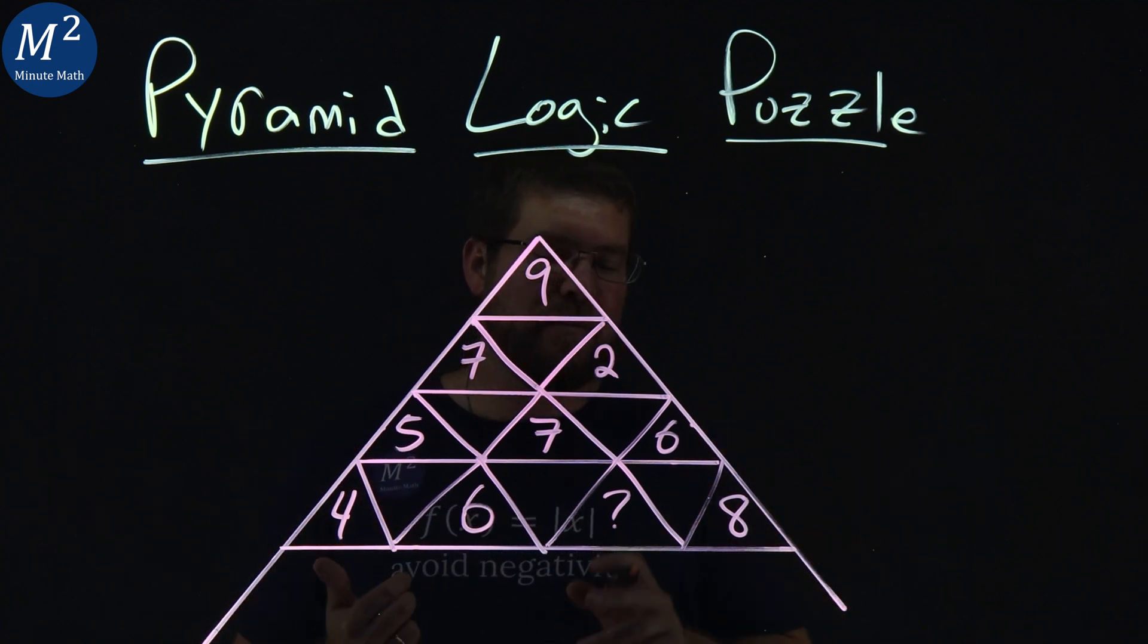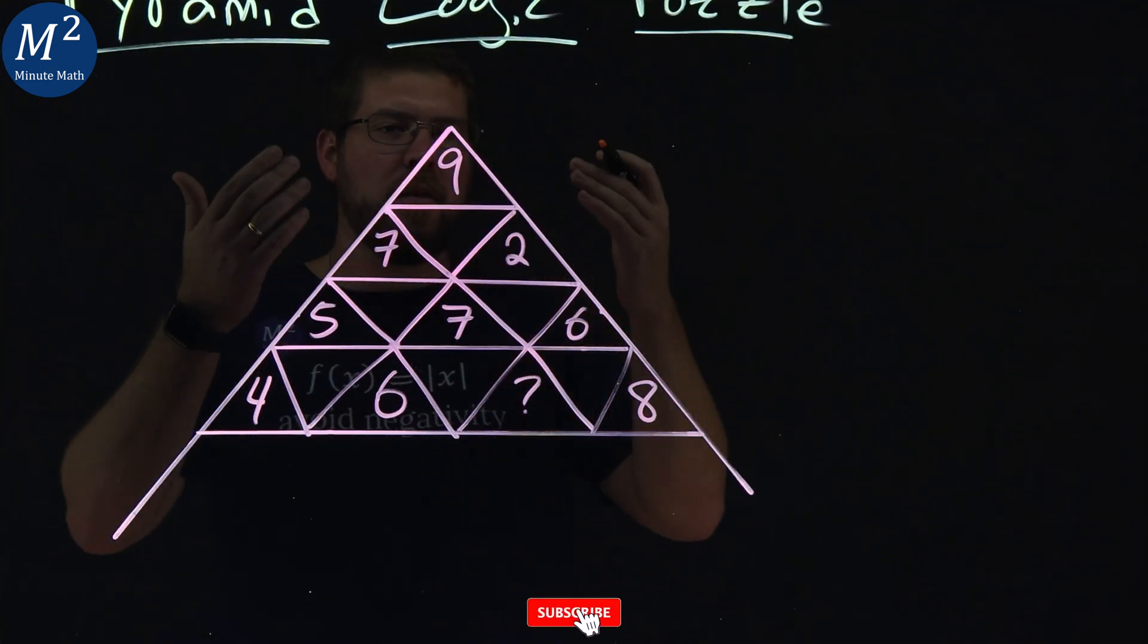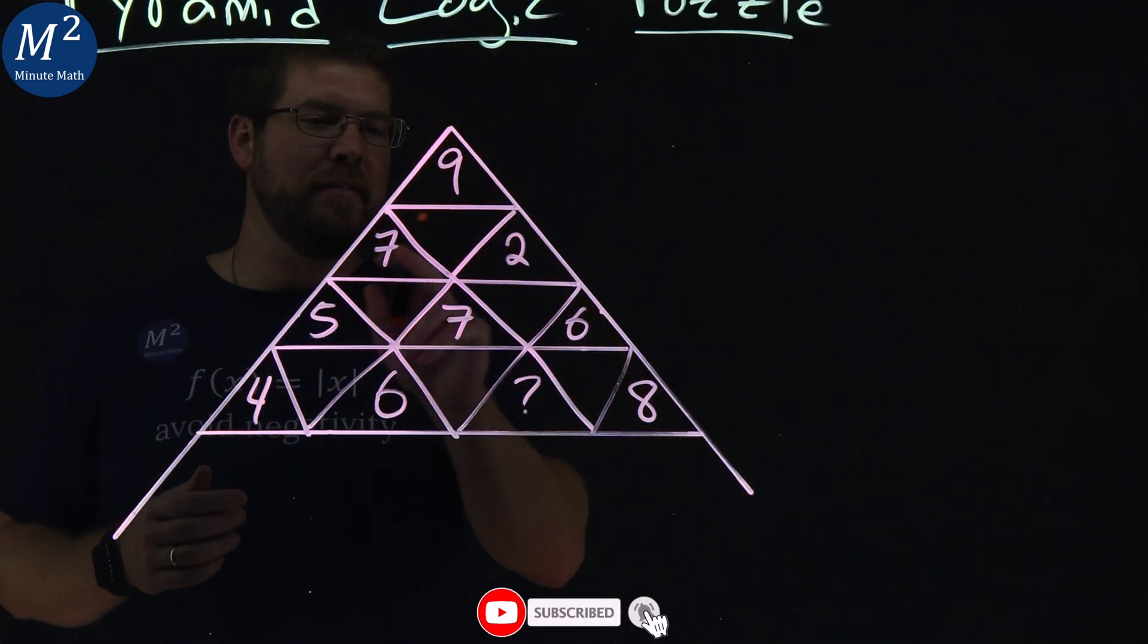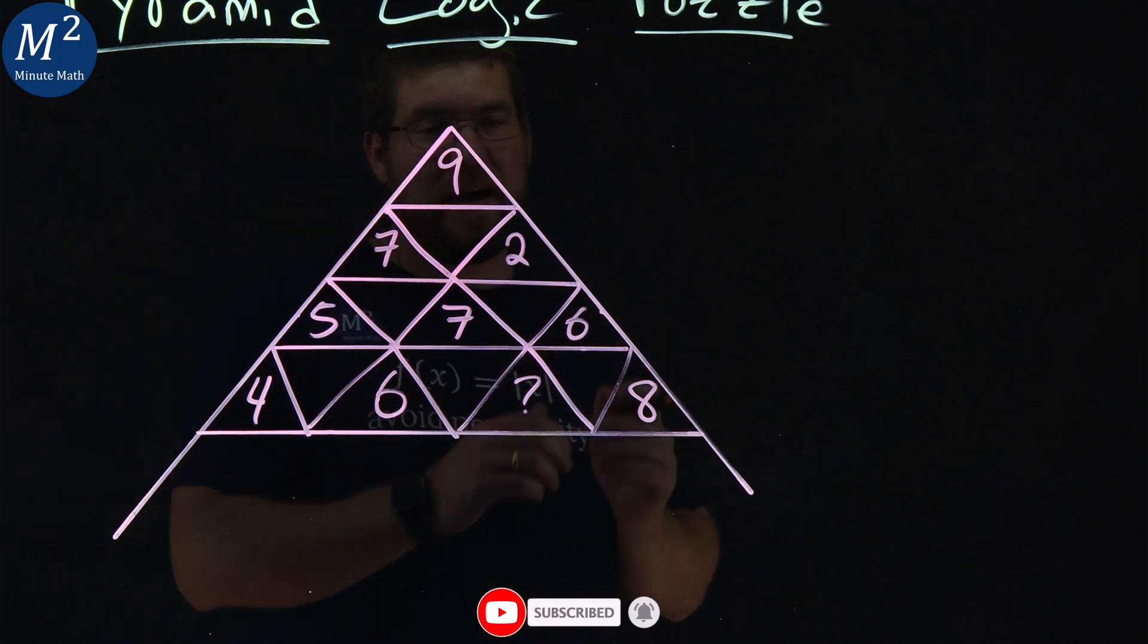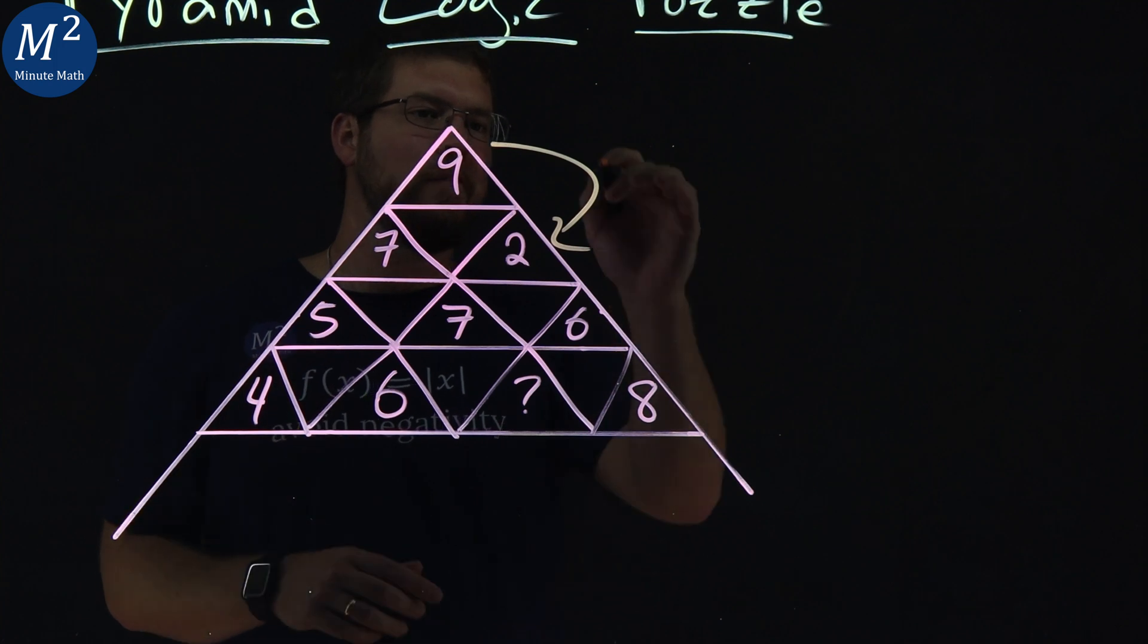All right, at first looking down the pyramid, I'm seeing 9, 72, 5, 76, 4, 6, blank, 8. Some number, some pattern here. 9 gets to 72 if I multiply that by 8.